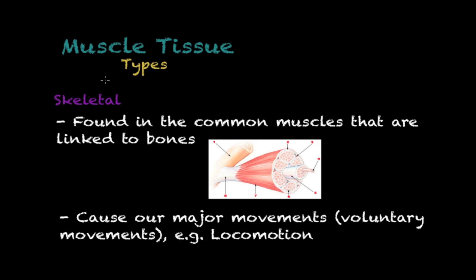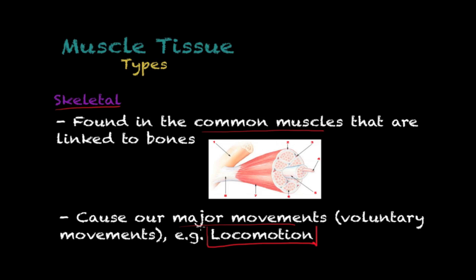The first type is skeletal muscle tissue. This is the type of tissue found in the common muscles that are linked to bones. This tissue causes the major voluntary movements — an example is locomotion. When you walk, you are using your major muscles, which are comprised of skeletal muscle tissue.